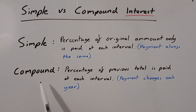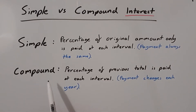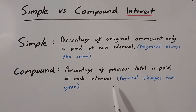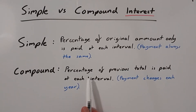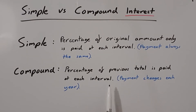Compound interest on the other hand works slightly differently. Whereas simple interest only takes a percentage of the original amount, compound interest is when a percentage of the previous total is paid at each interval. With our bank account example, you'd still get 10% on your original thousand, so your first year would be exactly like simple interest — 10% of a thousand is £100 — and your total becomes £1,100 after that first year. But with compound interest you take the interest rate on the previous total.